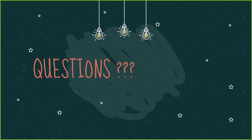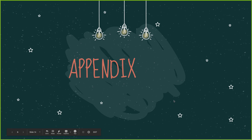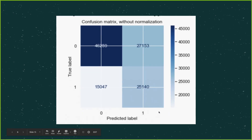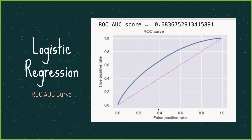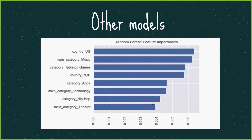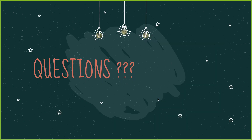That concludes my presentation. For those who are interested, I included additional diagrams in my appendix, such as my confusion matrix, my ROC-AUC curve, and insights from other models that I could not cover with logistic regression alone. Any questions?